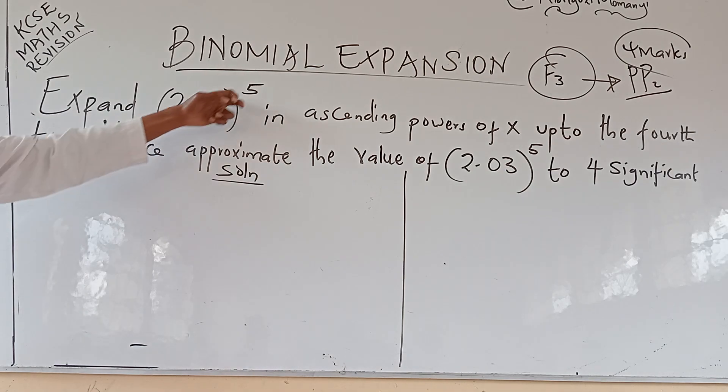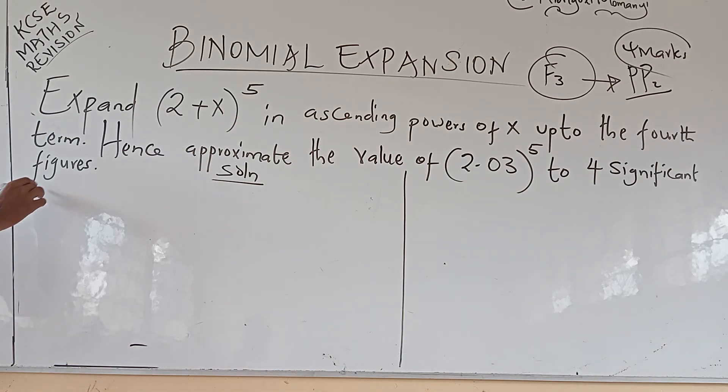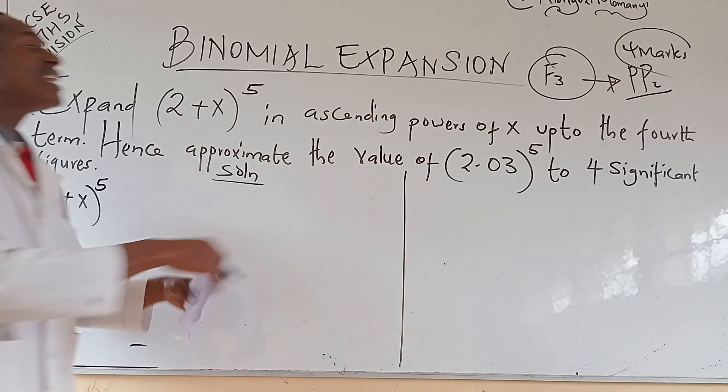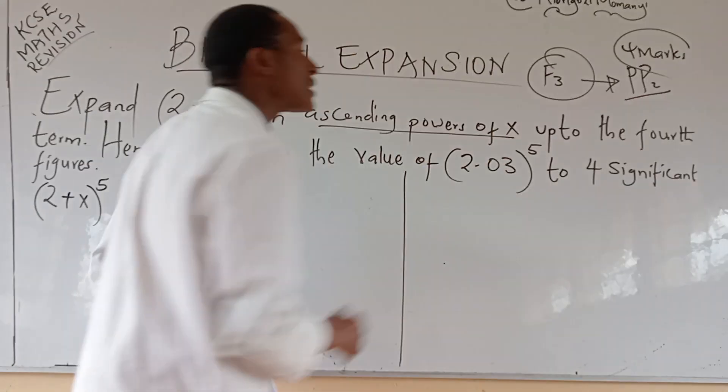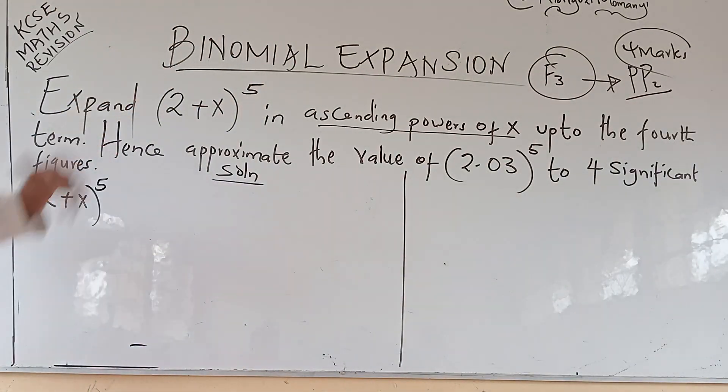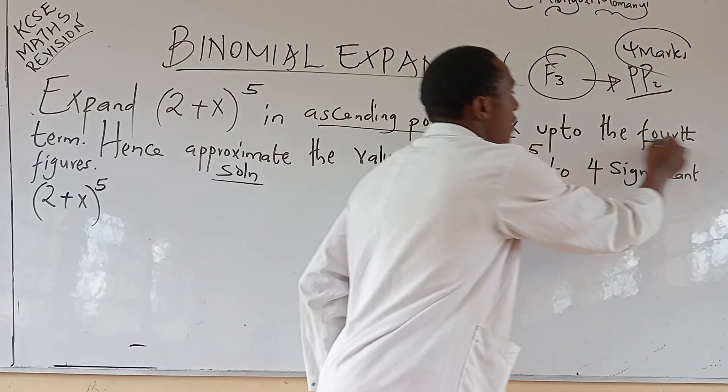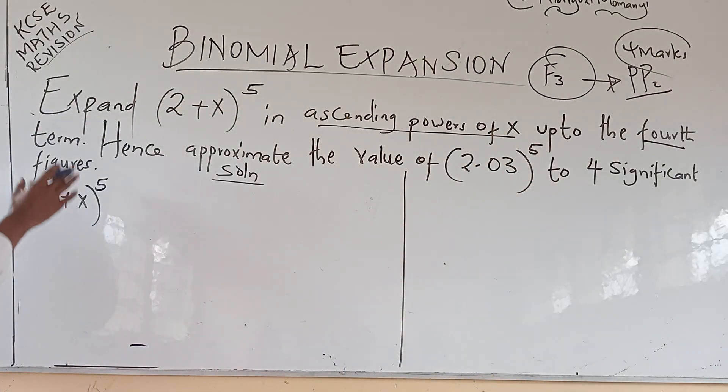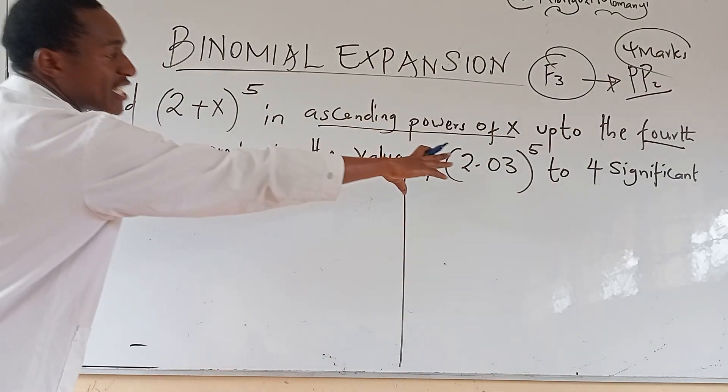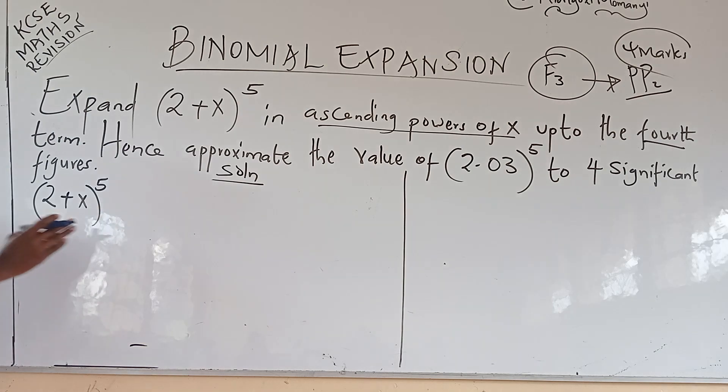Now follow me in this example. Expand (2+x)^5 in ascending powers of x, very important, up to the fourth term. And of course, hence use it to estimate the value of these. We shall go to that one first.